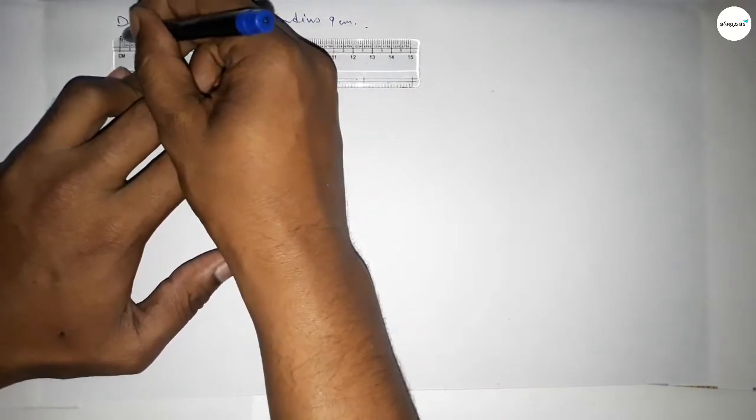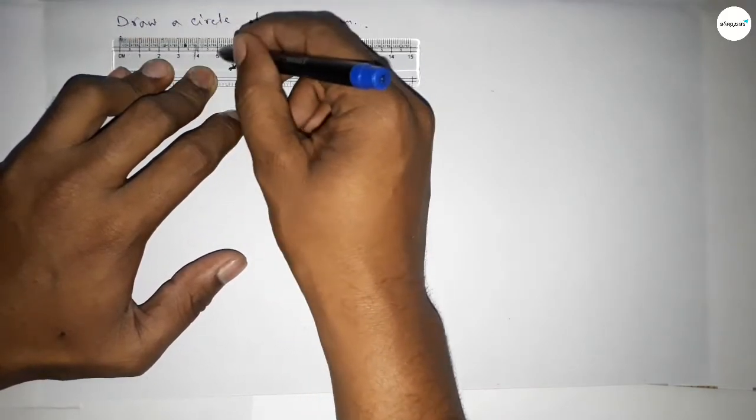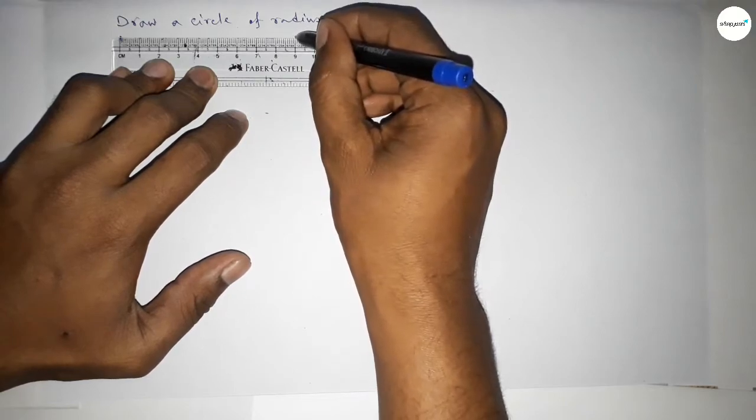First of all, drawing here the radius 9 centimeter, so this is starting 0, 1, 2, 3, 4, 5, 6, 7, 8, and this is 9.